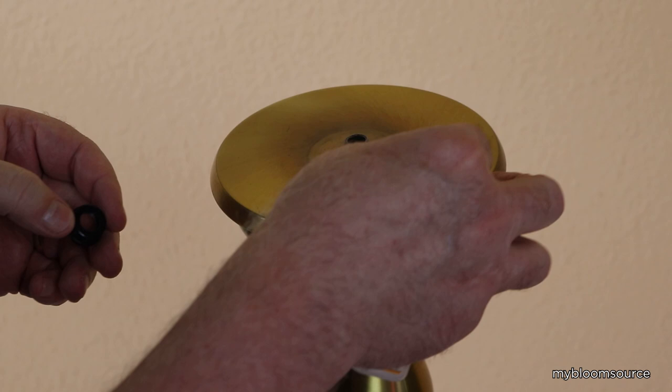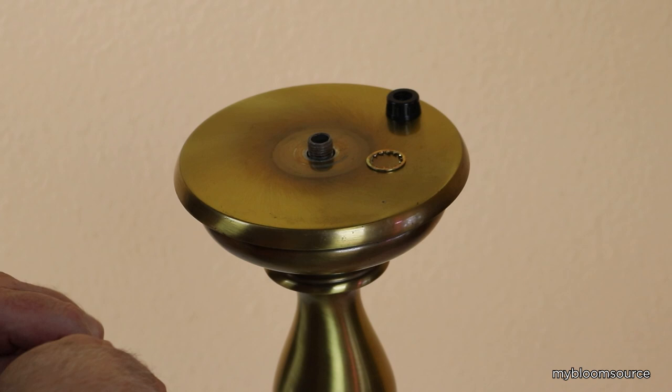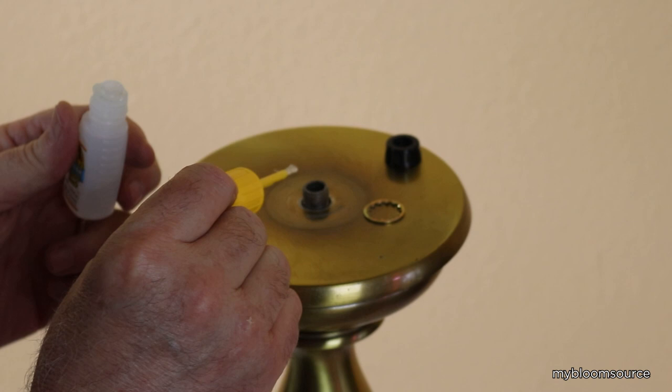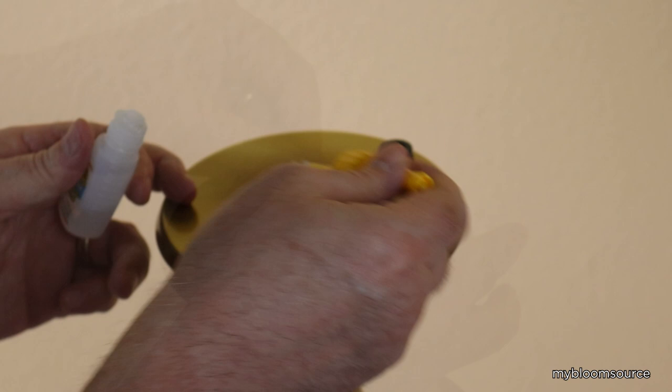Before we glue the spacer in place we need to make sure our lamp sections are secure. Since the spacer was going to be glued into place we applied super glue to the top nut so that it wouldn't come loose later. We then tighten the bottom nut.